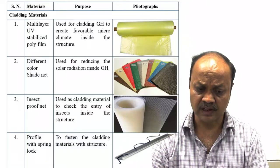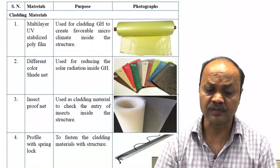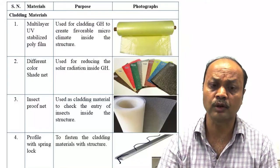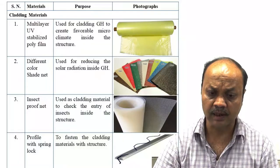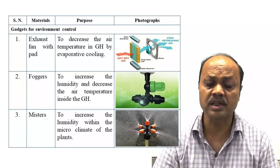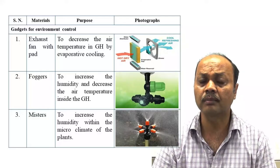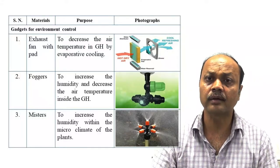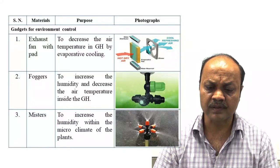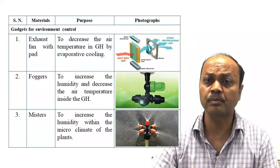Different types of shade net are used mainly for reducing light intensity and making the microclimate suitable inside the greenhouse, especially during summer. Insect proof net is used so insects do not go inside the structure. Profile gripper is used to fasten the cladding material. Fan-pad cooling system is very common, used mainly to reduce temperature during summer, and due to water vapor pressure, RH also increases inside.